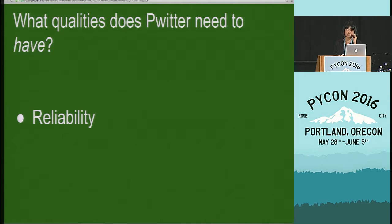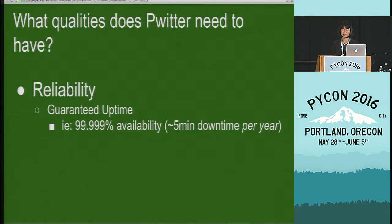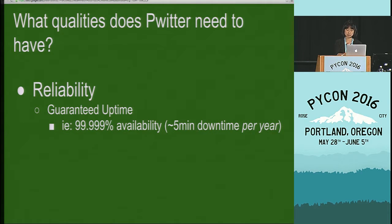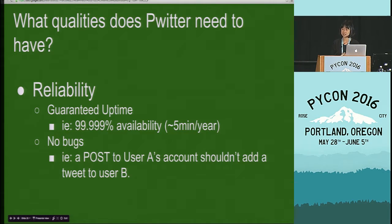So this is a service that other services depend on. What qualities does it need to have? Well, reliability is a top one. If our service goes down, it could jeopardize the whole user experience. There are multiple types of reliability. There's uptime reliability — Twitterer as a service can't be offline, because if the service is down, then the website is down, the mobile apps are down, or at least showing some degraded experience. We can aim to be up 99% or 99.999% of the time, which adds up to slightly more than five minutes of downtime. And aside from being up, we really care about correctness — if your service is up, you want to make sure it's doing the right thing. For example, a POST to user A's account shouldn't add a tweet to user B's feed.